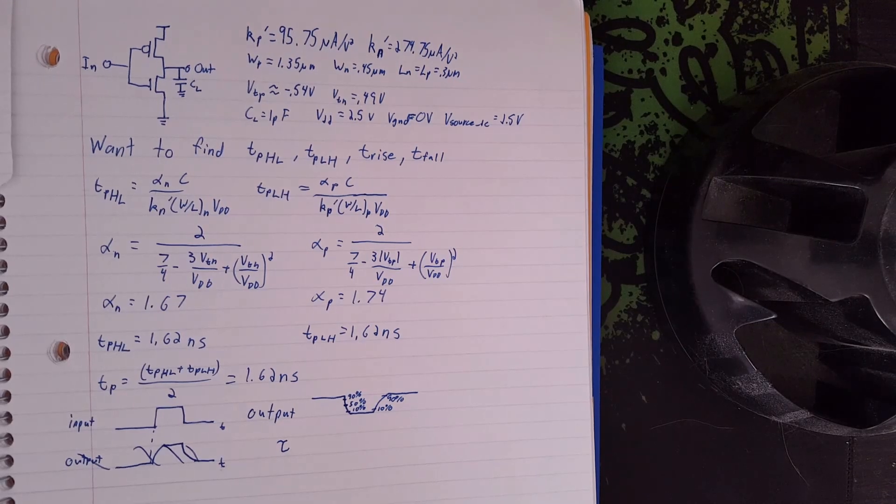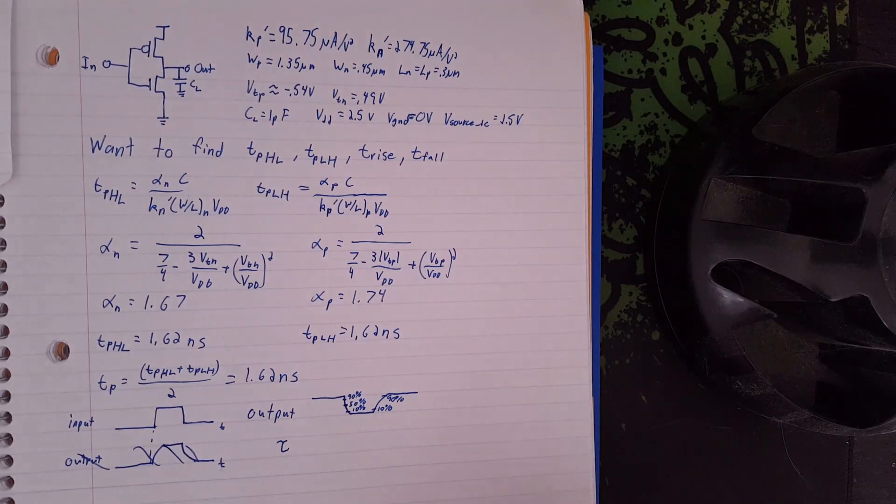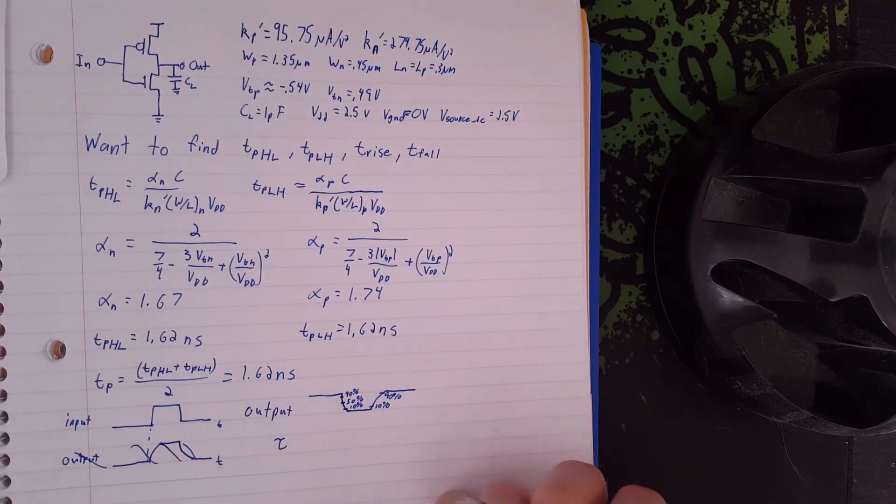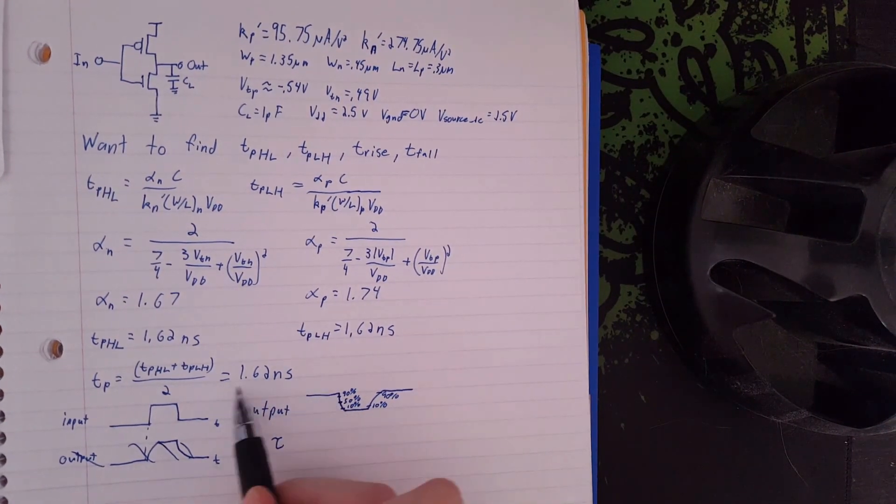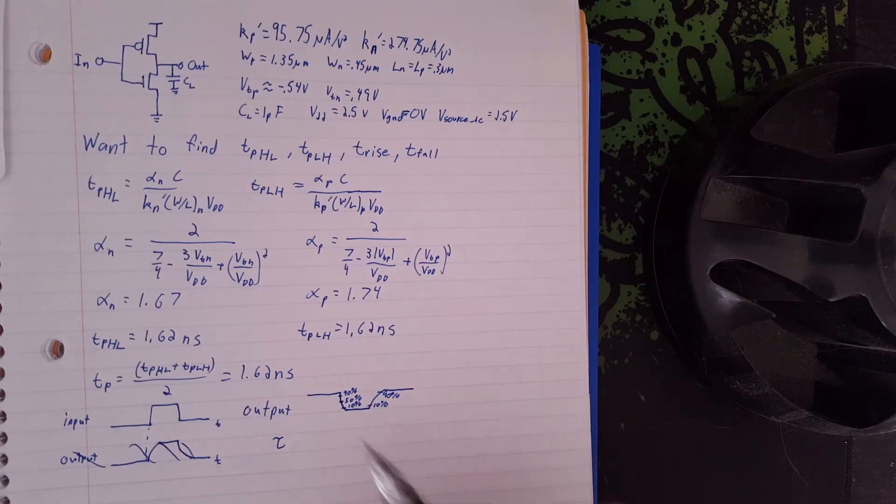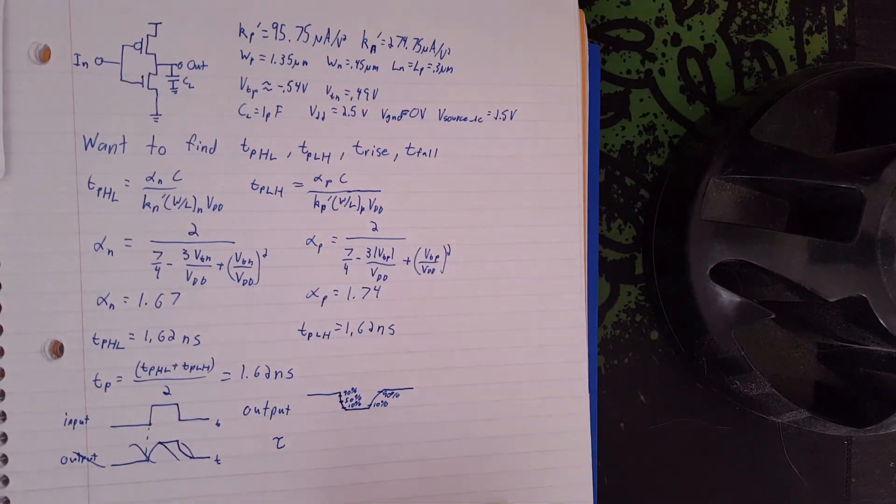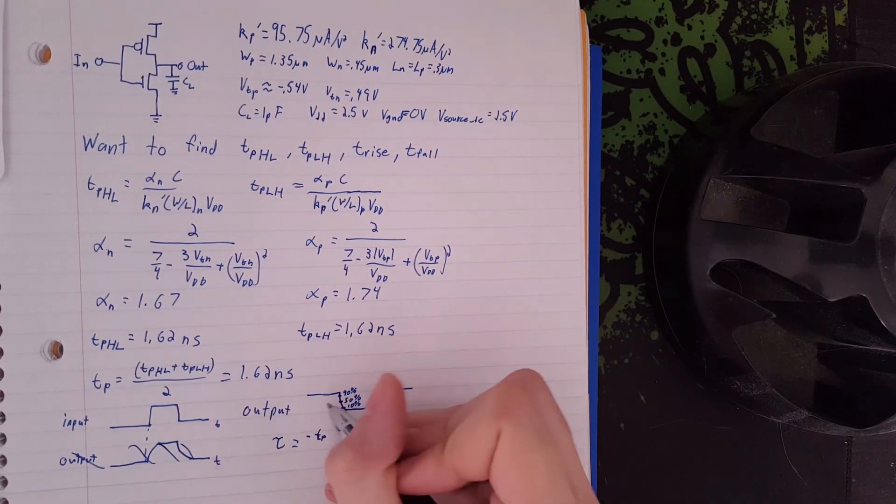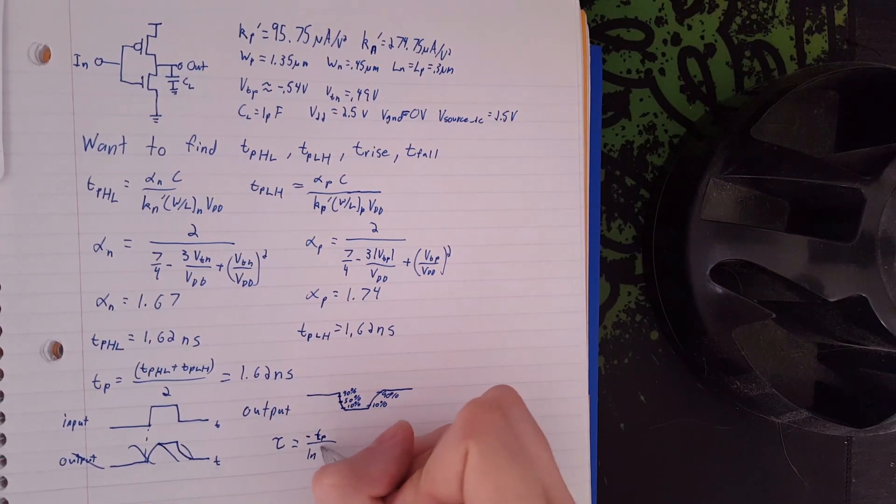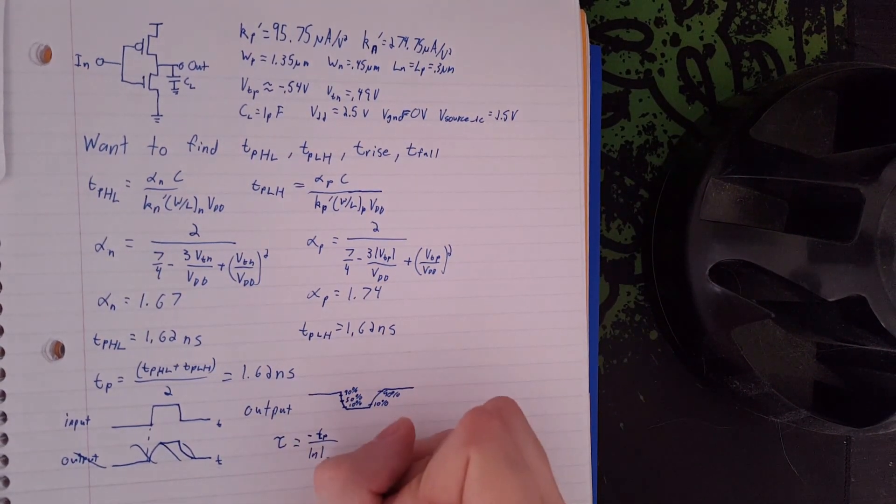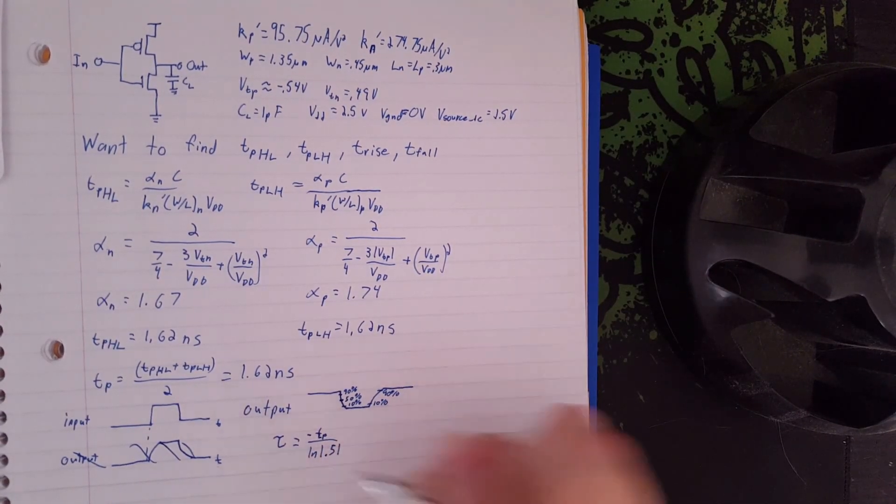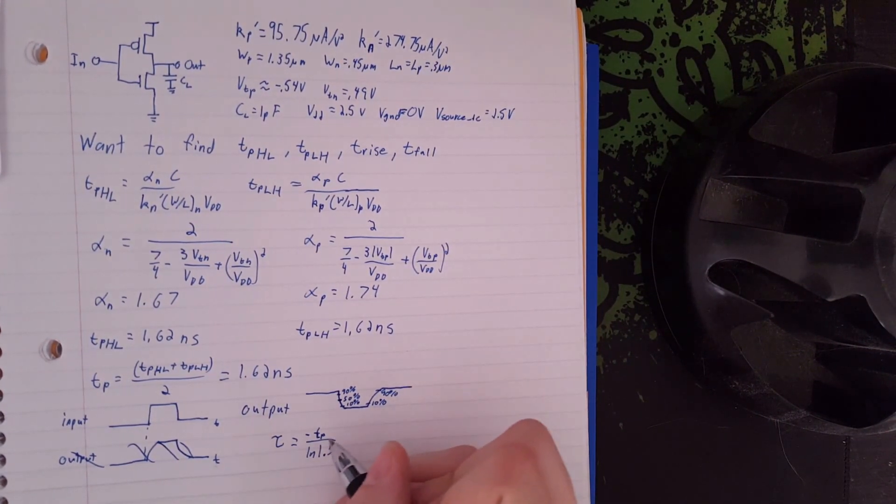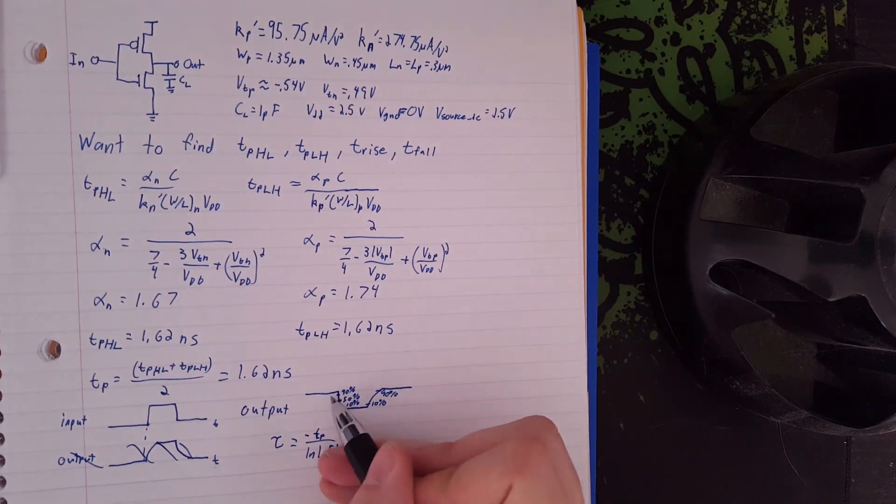So if you remember from prior classes, you can calculate tau of an exponential based on some known time. In this case, we know that at 50%, it's going to be 1.62 nanoseconds after zero, or 100% in this case. So we can say that tau is equal to negative TP, because we're going from high to low, and to make the units work out, the ln of 0.5. This ln, because it's exponential, it's e to the t. So if we want to find tau as a function of t, we need this ln. And 0.5 because it's 50% of the maximum.